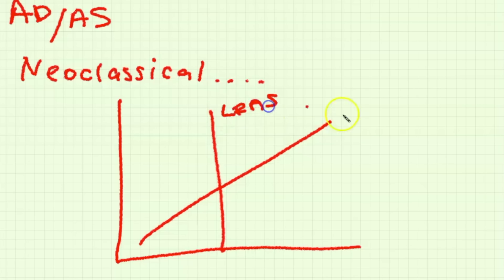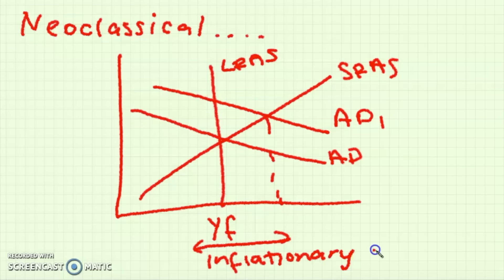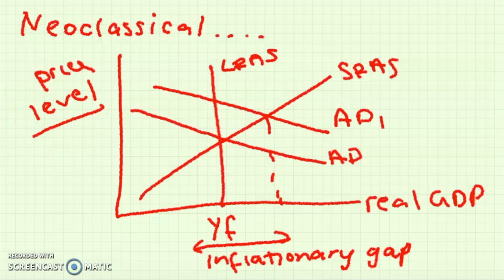Now for aggregate demand and aggregate supply. The neoclassical model of aggregate demand and aggregate supply uses LRS, SRS and AD because it does see a difference between the short-run and long-run aggregate supply. Here I'm showing you an inflationary gap where actual GDP or real GDP is above YF. YF is the full employment level of output. It is always where LRS intersects the x-axis.